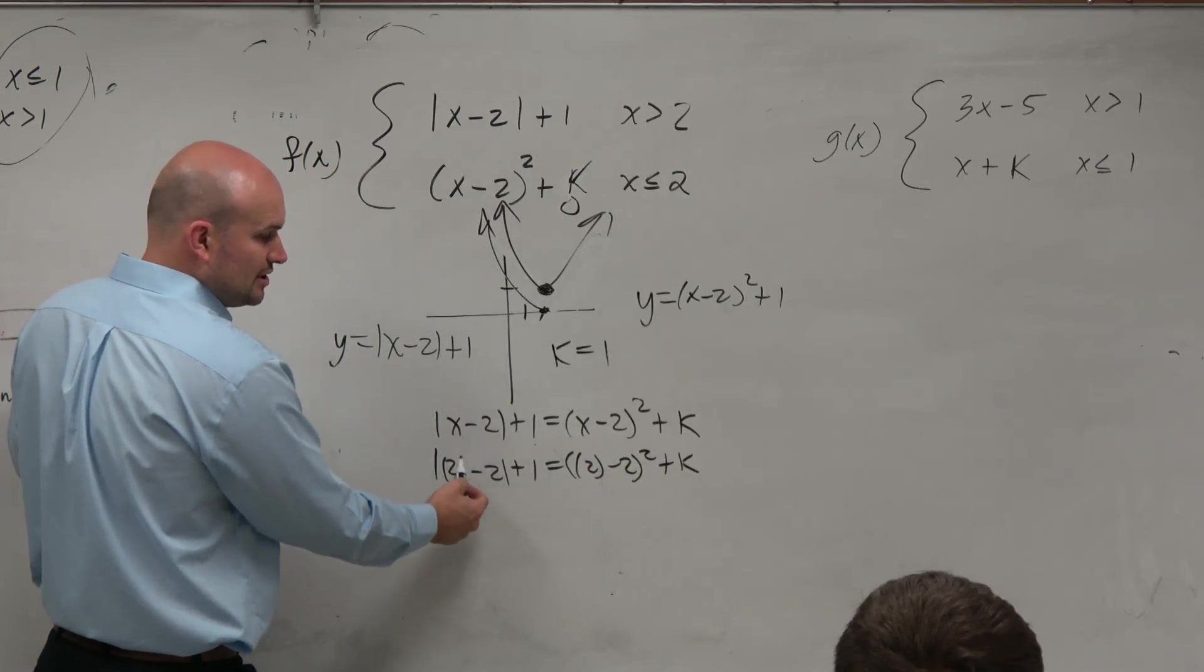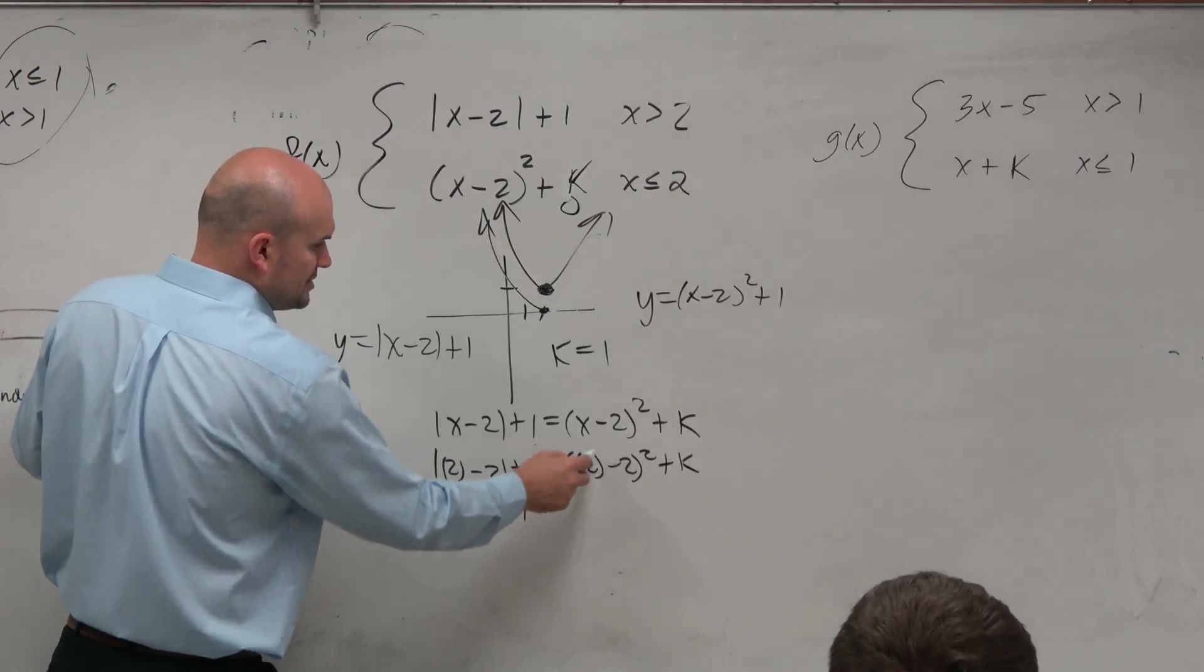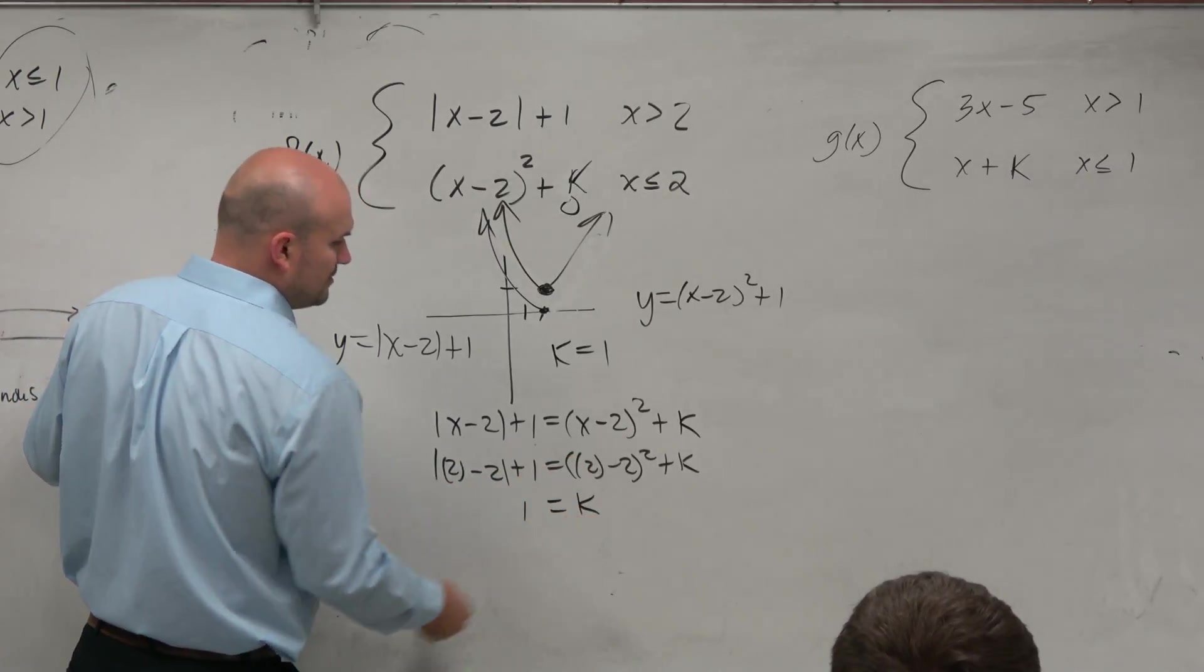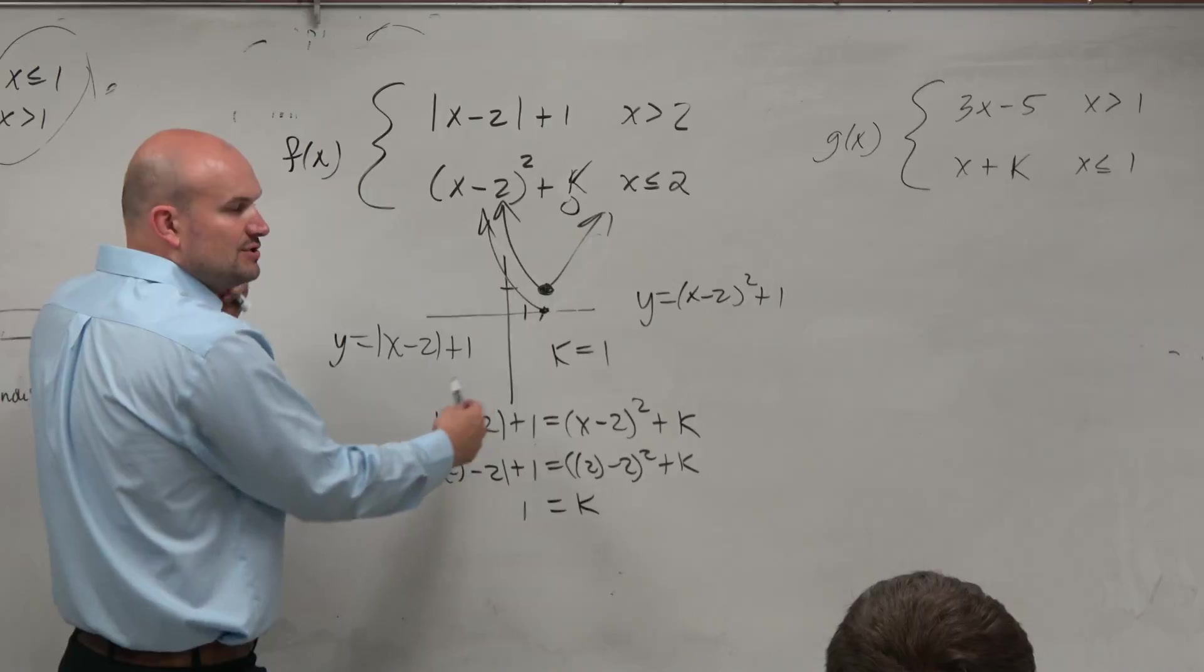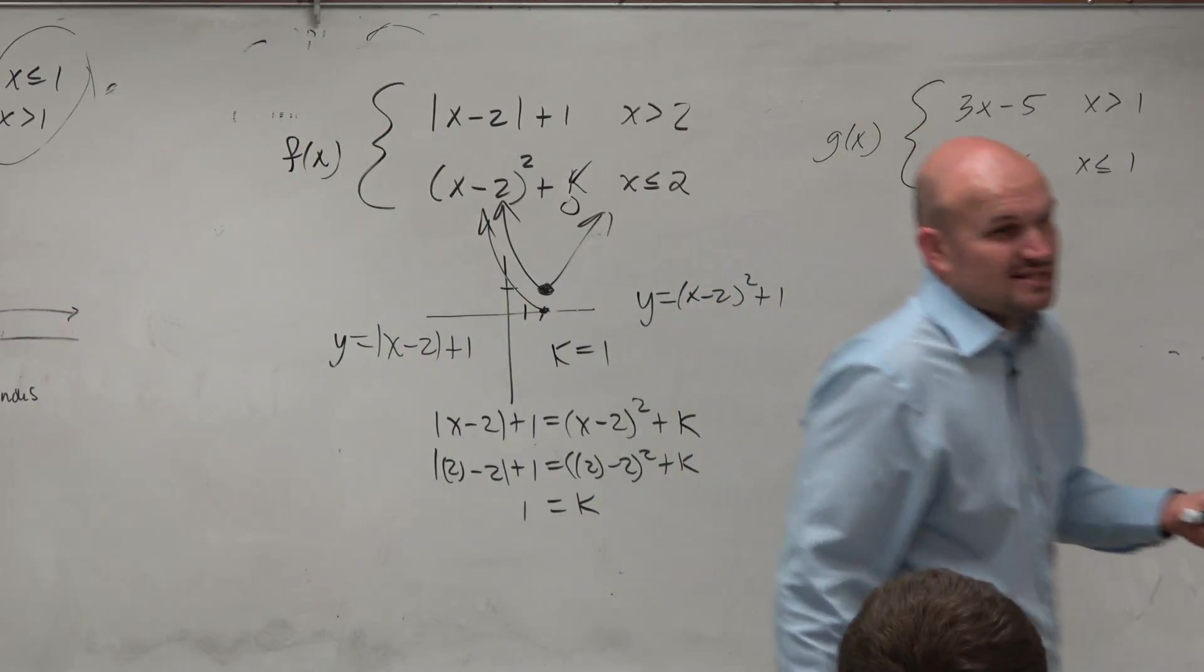And 2 minus 2 is 0. 0 plus 1 is 1, so k equals 1. And that's the algebraic way to find that value. Because not everything is going to be easy to graph.